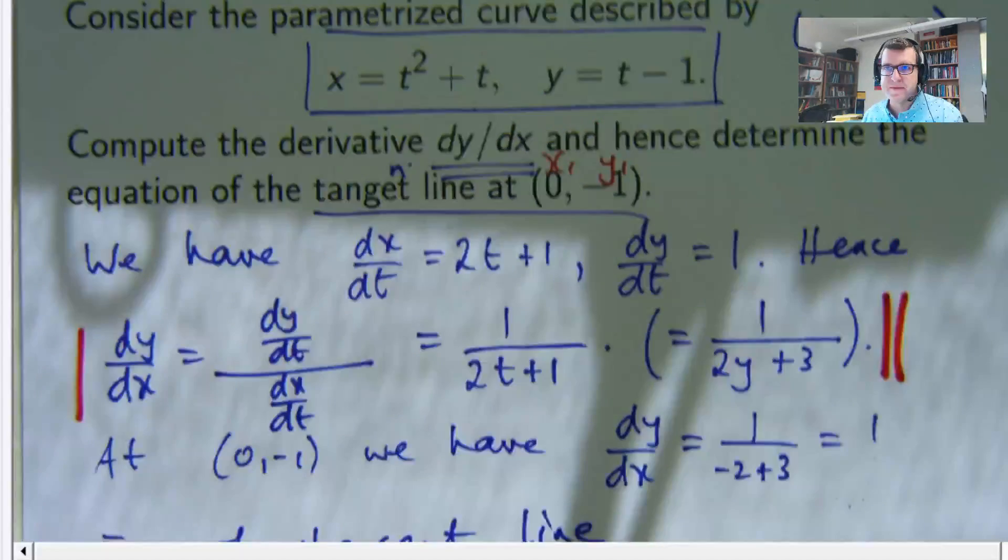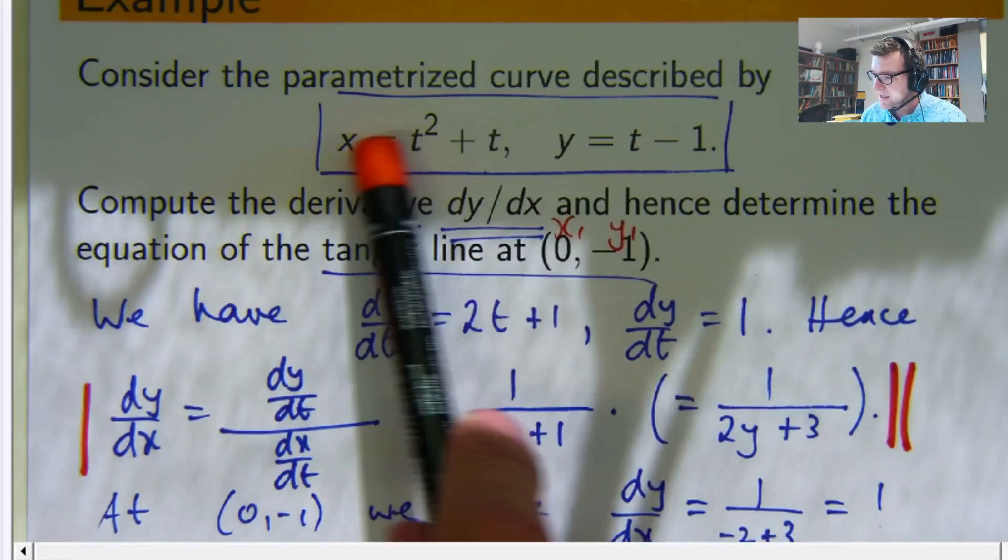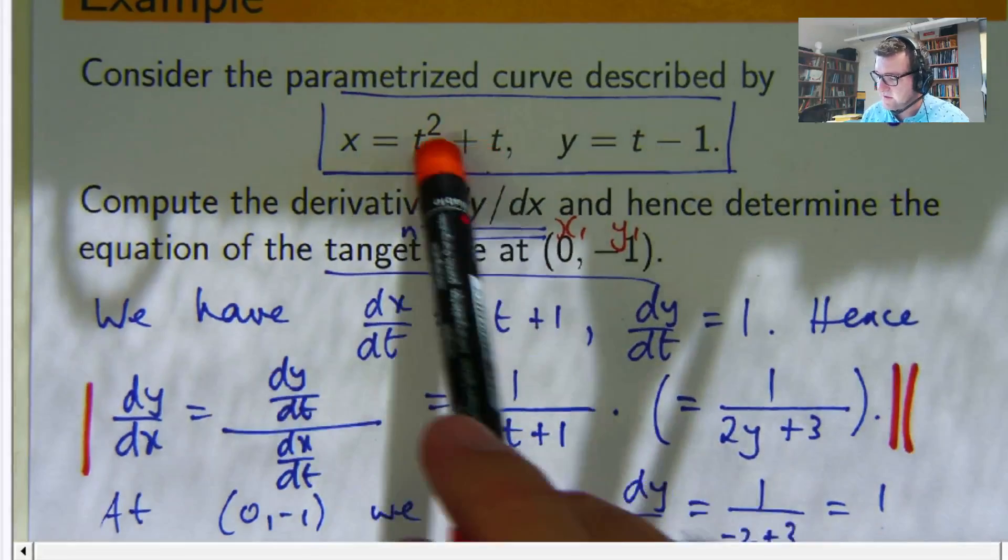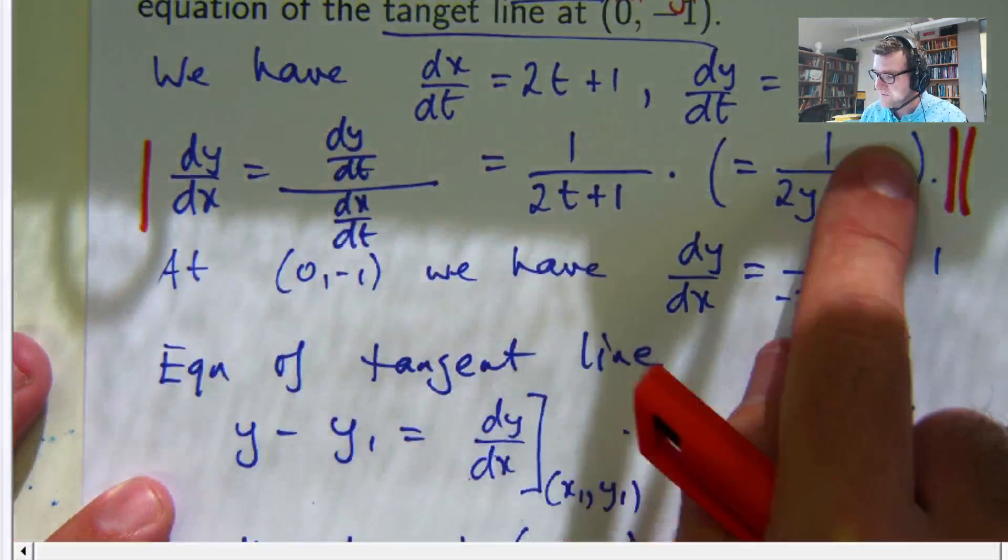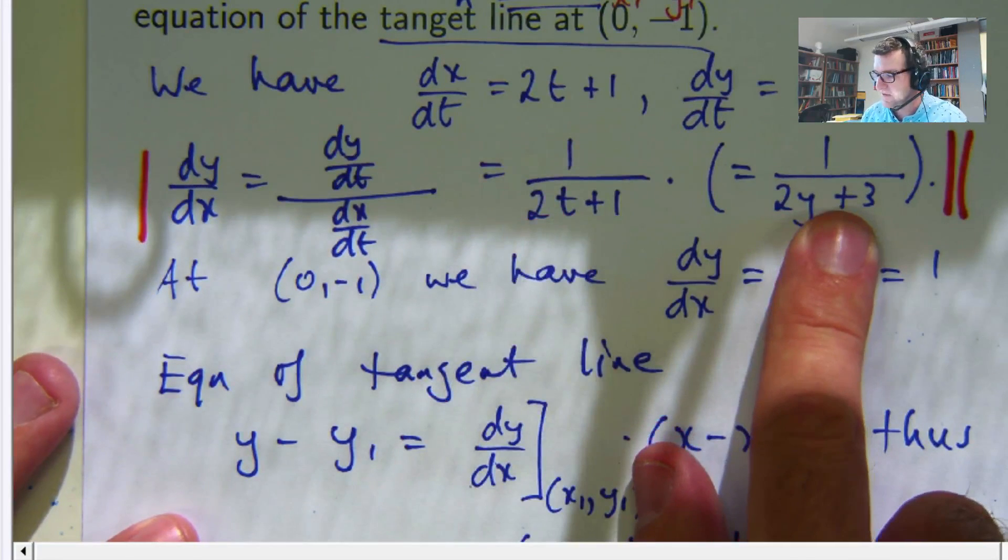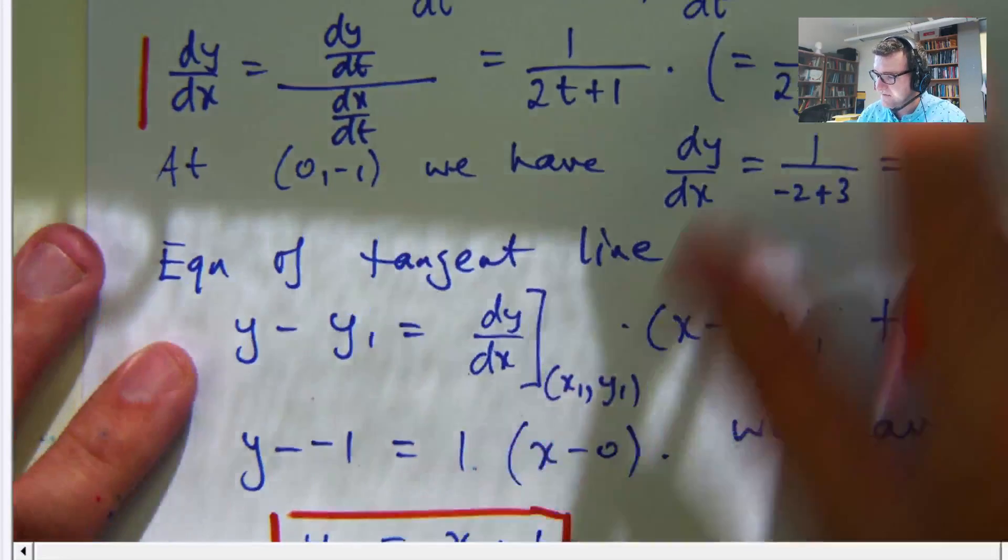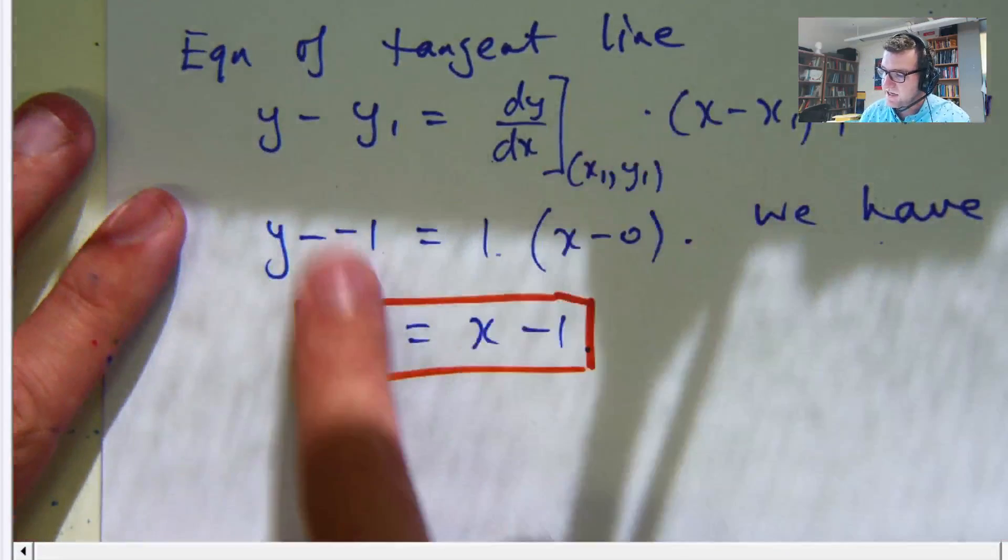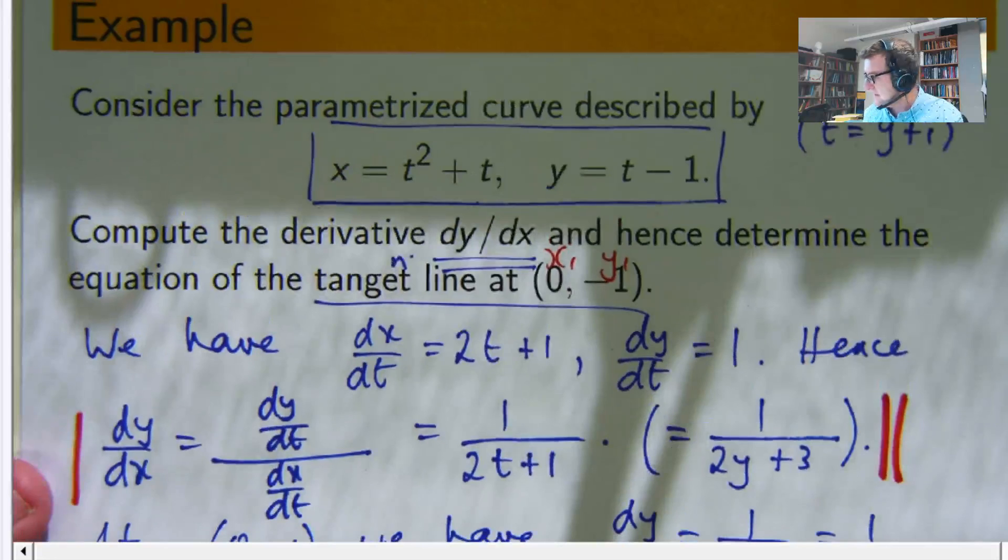Alright. So let's just recap. We were given the equations for the points of this parametrized curve. We computed dy/dx using our little formula. You could leave it in terms of t. I decided to put it back in terms of x and y if I could. And then for the tangent line, I worked out the derivative at the point in question and used the standard equation.